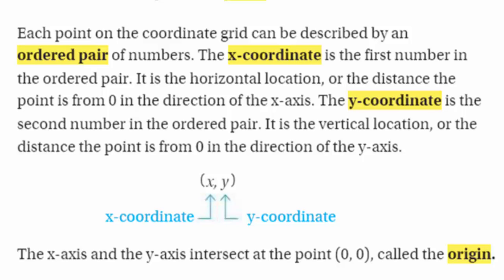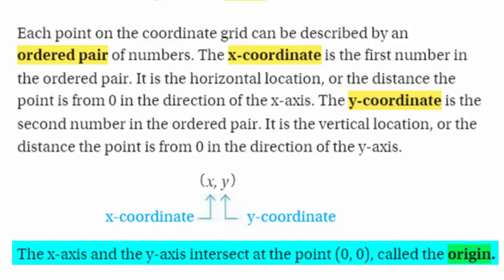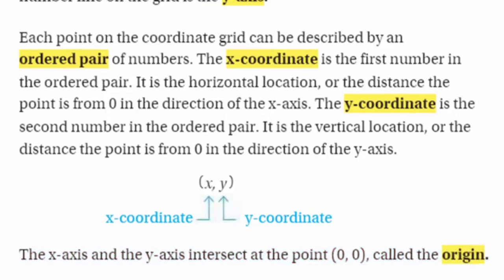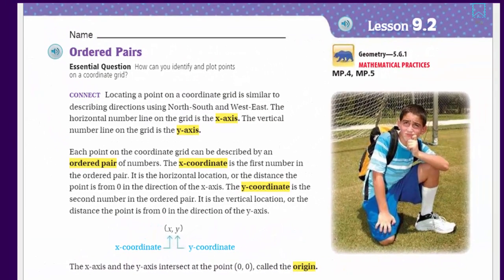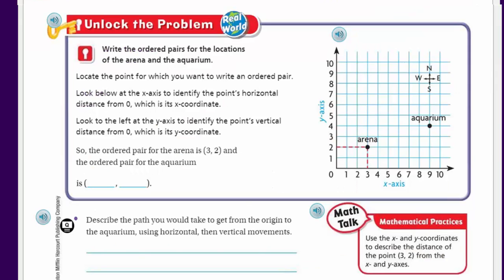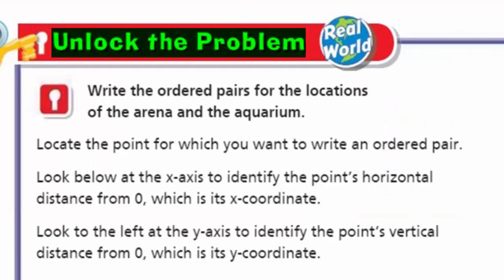The x-axis and the y-axis intersect at the point (0, 0), which is called the origin — kind of interesting. We were talking about the origin of the universe; the origin is the beginning. Now, before we can do any of that, you guys know what we're looking at: unlock the problem.